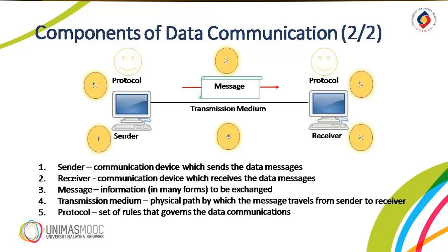The third one is the message. The message is the information or data to be communicated. Popular forms of information include text, numbers, pictures, audio, and video. The fourth one is the transmission medium. The transmission medium is the physical path by which a message travels from the sender to the receiver. Some examples include twisted pair wire, coaxial cable, fiber optic cable, and radio waves.